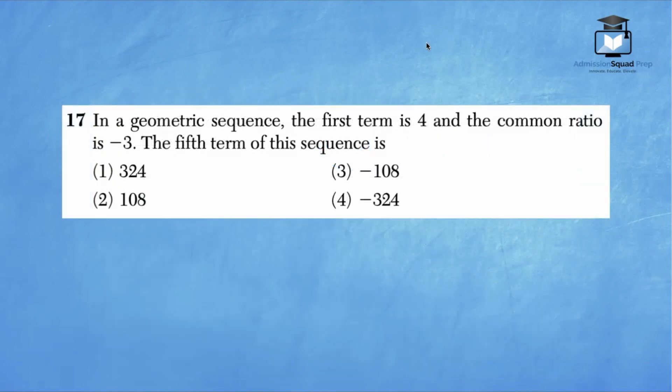For number 17, it states, in a geometric sequence, the first term is 4 and the common ratio is negative 3. The fifth term of this sequence is, so for those of you who feel that arithmetic and geometric sequences are confusing, I'd like to give you a shortcut.